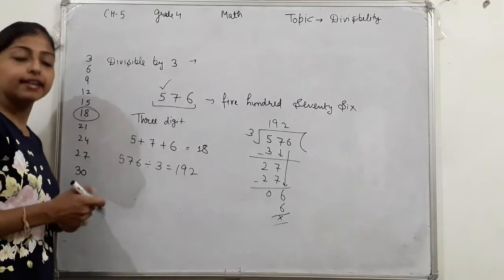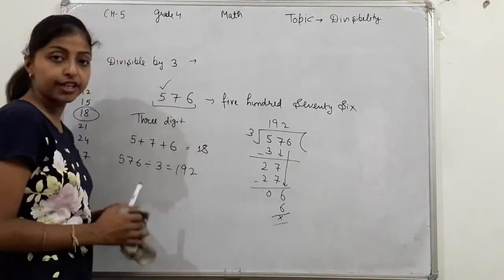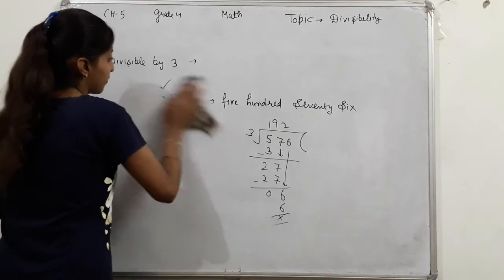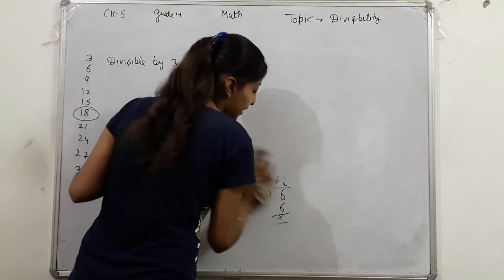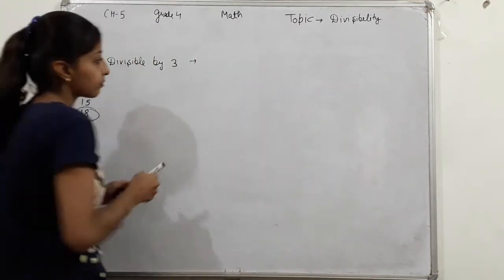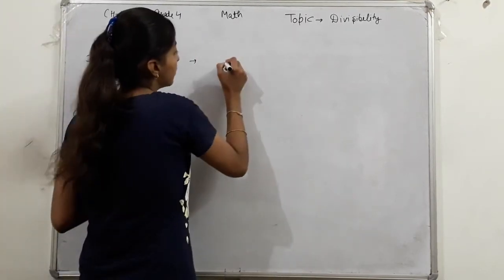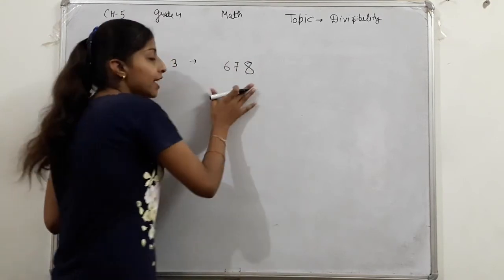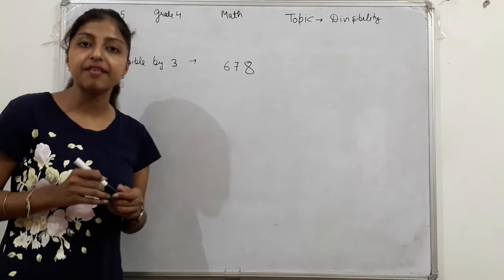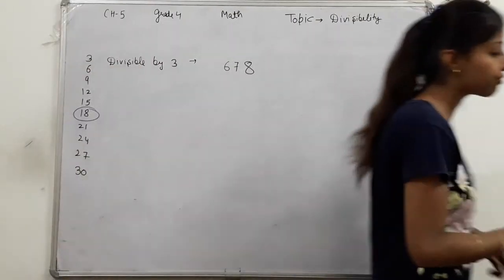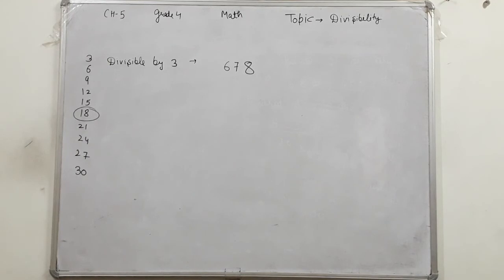So 576 divided by 3, answer is 192. So here we have divisibility test. We have to check the question - just see if the sum of digits is divisible.